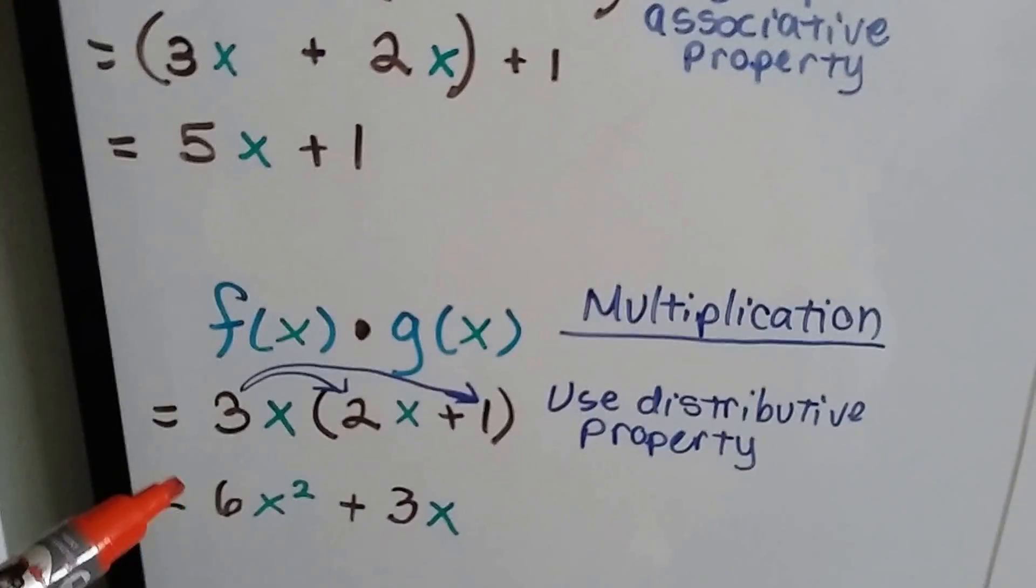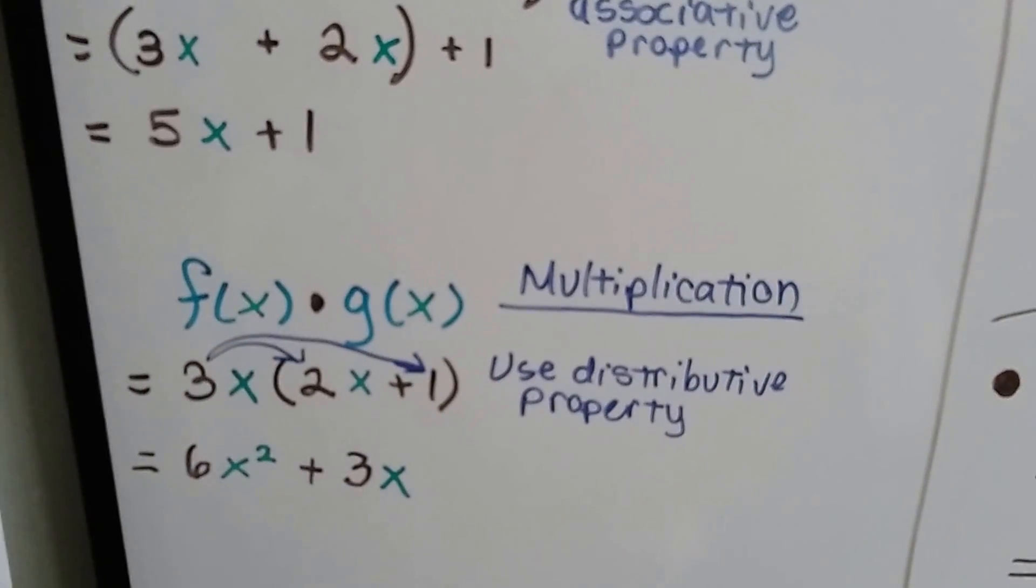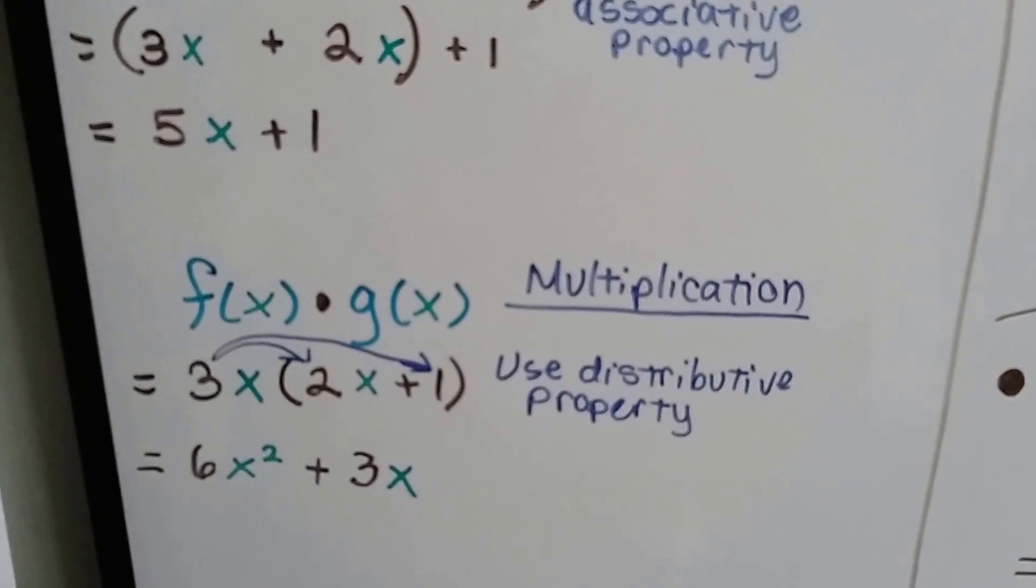If we want to multiply them, we use the distributive property and we get 6x squared plus 3x. Isn't that easy?